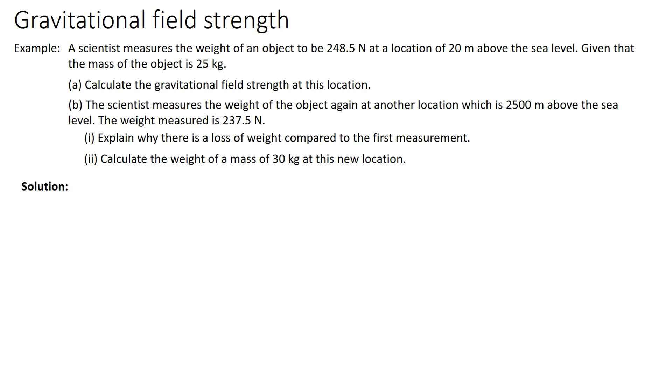Now, let's look at the solution. We know that W equals mg. Hence, g is W over m. So the weight here is 248.5 divided by 25 and we get 9.94 Newton per kg.